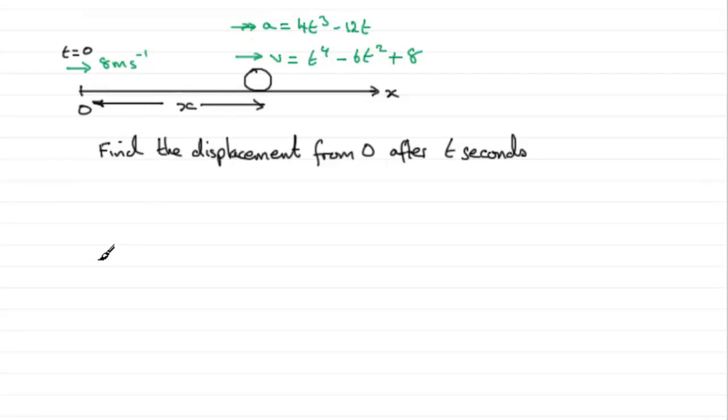Now to get x, we should be familiar with the fact that to get displacement, it's the integral of velocity with respect to time. And we've got v, we found out v from the previous part. It was t to the 4 minus 6t squared plus 8. So we need to integrate this with respect to the time t.